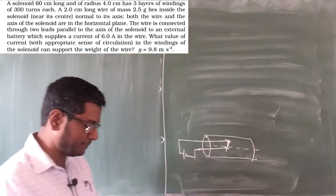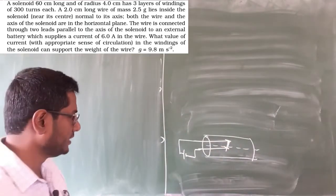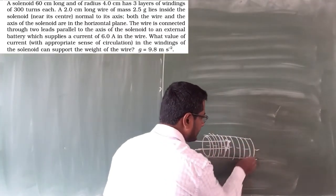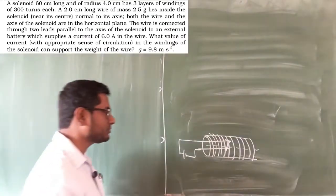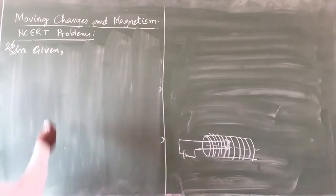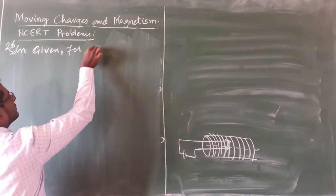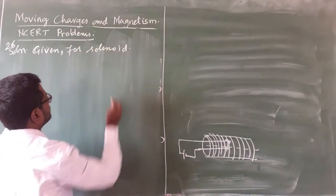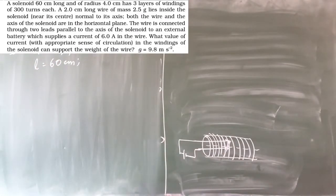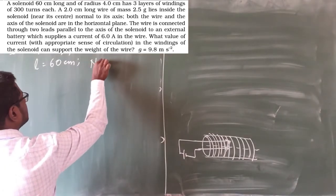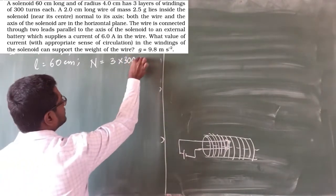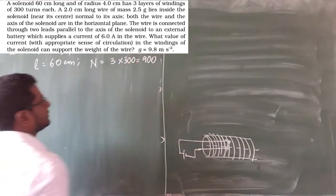The current in the wire is 6 ampere. What we need to find is the current that will be flowing in the windings of the solenoid so that it produces a magnetic field which supports the weight of that wire. For the solenoid: length L is 60 cm. The total number of turns N — there are 3 layers each with 300 turns, so total N equals 900 turns.